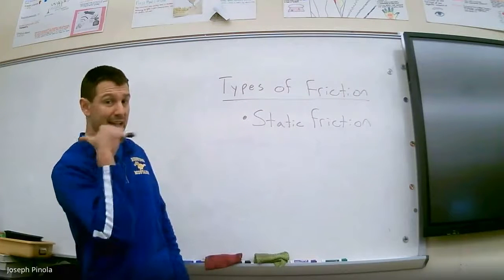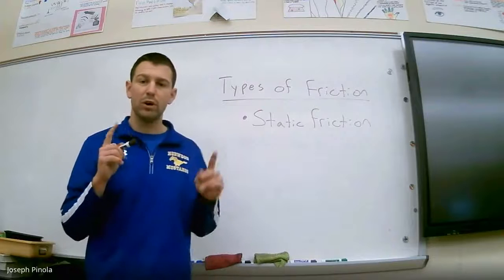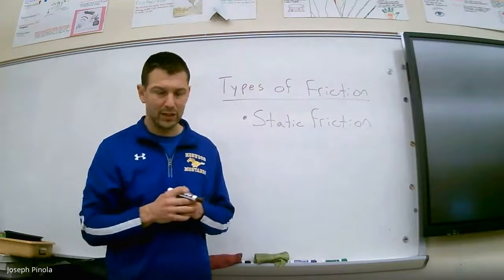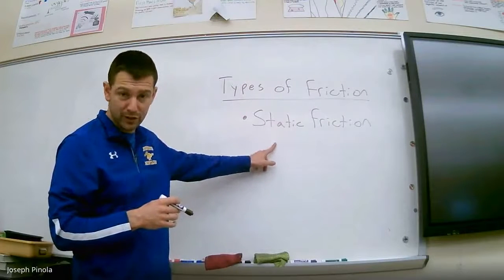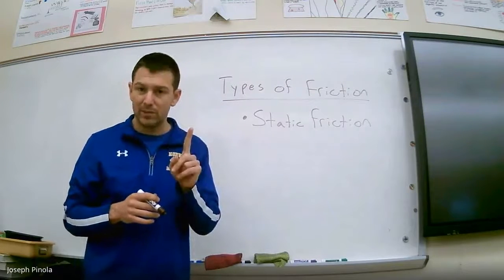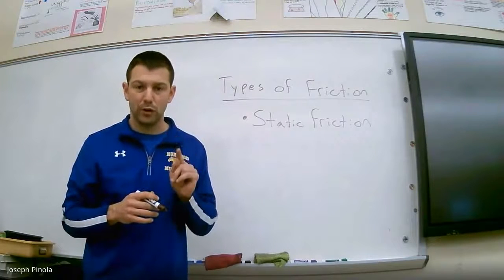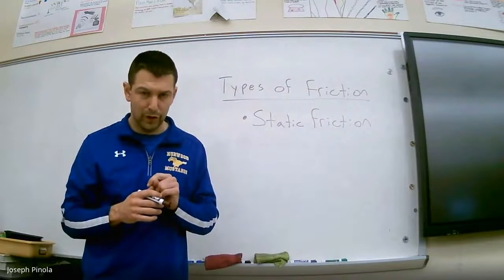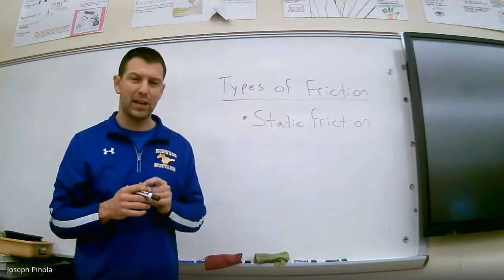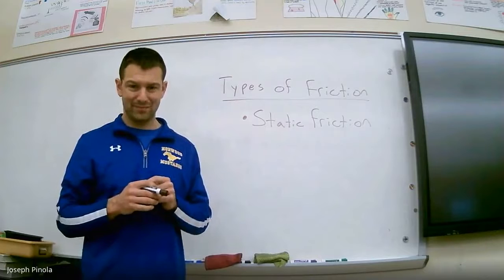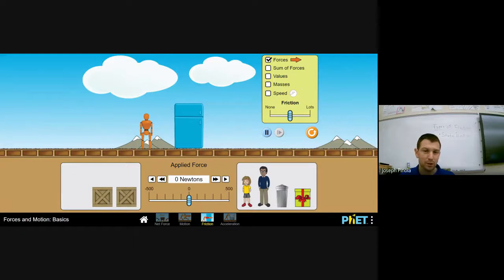Static friction acted the opposite way, working against my force. Static friction always works when an object is at rest but another force is trying to get it to move—it will work against that other force and try to keep the object at rest. Let's now go to the screen and look at what was actually happening when static friction worked against me.